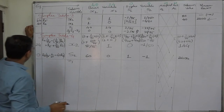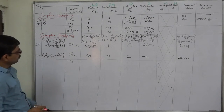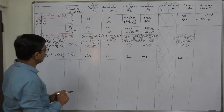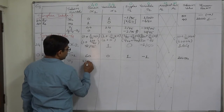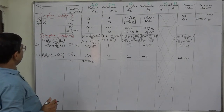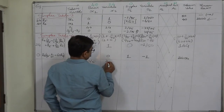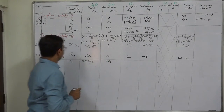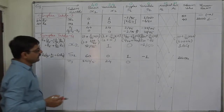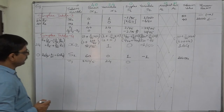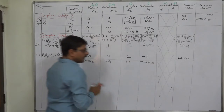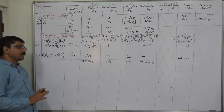The variable of the key column, S1, will come in place of X1. The coefficient of S1 in the Z function is 0, and that of X2 is 24. Now we can write Z J: 24 into 8/5 plus 0 into 60. 24 into 8 is 192, so Z J is 192/5. This gives us the optimal solution.